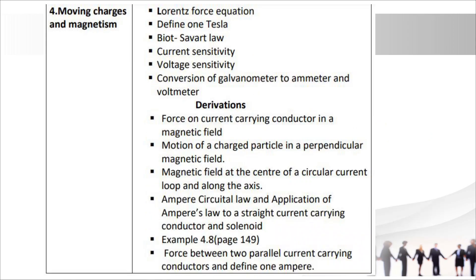Chapter 4: Moving Charges and Magnetism. Important topics are Lorentz force equation, 1 Tesla, Biot-Savart law, current sensitivity, voltage sensitivity, and conversion of galvanometer to ammeter and voltmeter. Important derivations: force on a current-carrying conductor in a magnetic field, motion of a charged particle in a perpendicular magnetic field, magnetic field at the center of a circular current loop and along the axis, Ampere's circuital law, and its application to a straight current-carrying conductor and solenoid. Example 4.8: force between two parallel current-carrying conductors and definition of 1 Ampere.